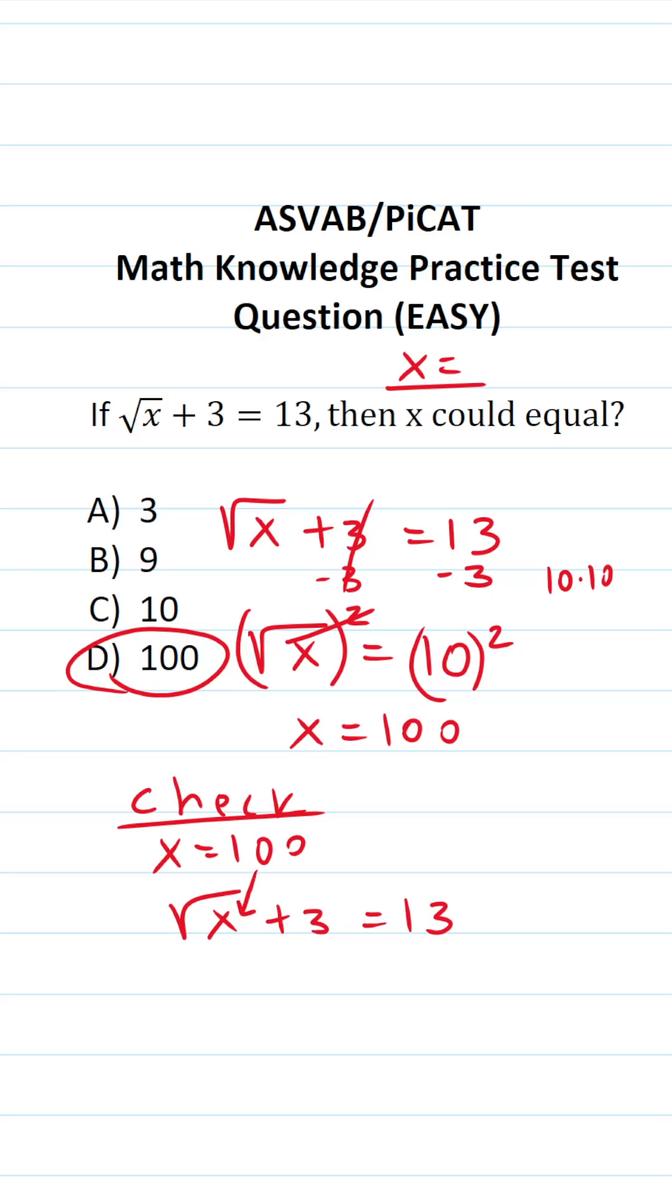So go ahead and plug in 100 for x. This becomes the square root of 100 plus 3 equals 13. Square root of 100 is 10. So this becomes 10 plus 3 equals 13. 10 plus 3 is 13. Does 13 equal 13? It does.